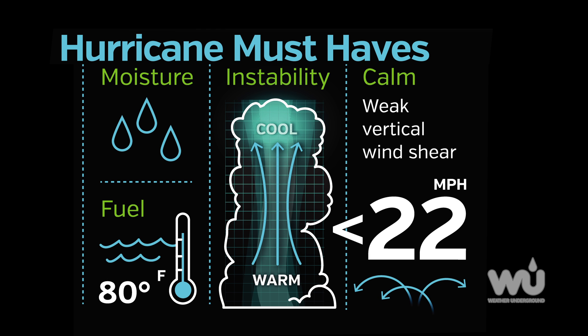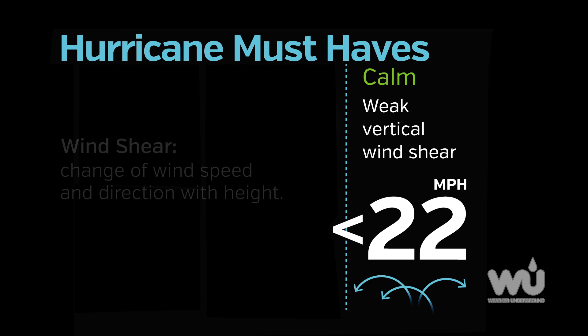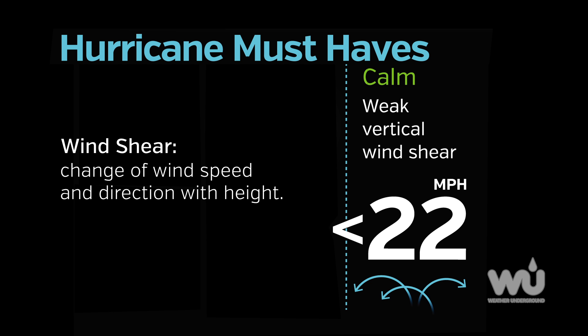Wind shear is the change of wind speed and direction with height, so this means a hurricane requires little change in winds with height in order to form — less than 22 miles per hour.